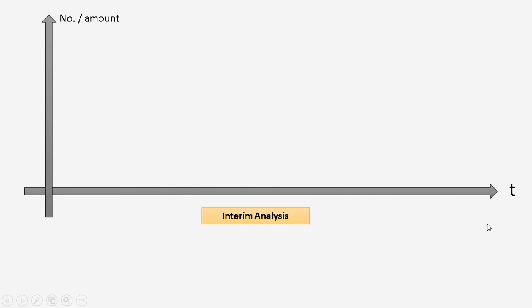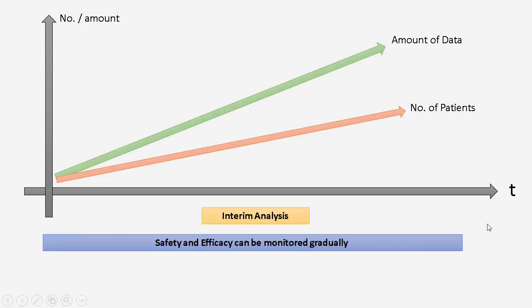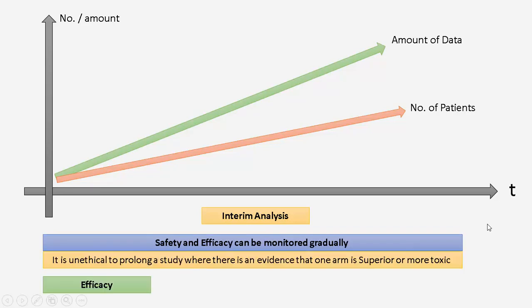As time goes by during the conduction of the trial, the number of patients enrolled increase and also the amount of data increase. Safety and efficacy can be monitored before trial ends. Then we can stop the trial for efficacy where one arm is significantly better or superior than the other, or for safety where one arm is significantly toxic or due to futility when you decide that the null hypothesis cannot be rejected.